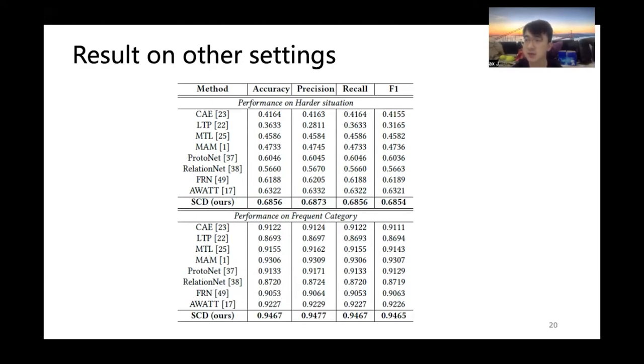What's more, we design an experiment that train and test the models on frequently appeared stress categories. As shown in this table, our framework achieves over 94% performance with over 1.5% improvement compared with the best baseline. It illustrates that our framework can not only work better on the rarely appeared stress categories, but also be effective on the frequently appeared stress categories.